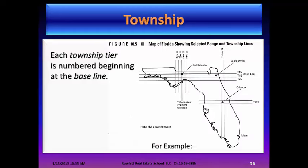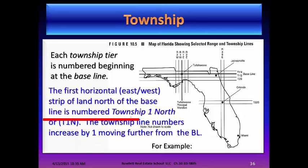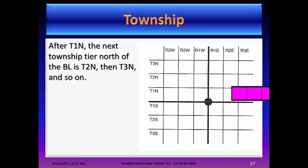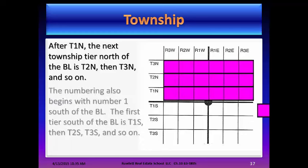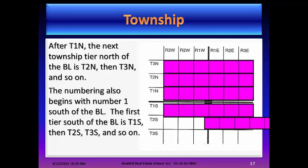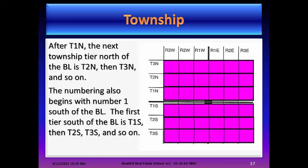Each township tier is numbered beginning at the baseline. The first horizontal strip north of the baseline is Township 1 North (T1N), and numbers increase moving further from the baseline — T2N, T3N, and so on. The numbering also begins with 1 south of the baseline: T1S, T2S, T3S, and so on.